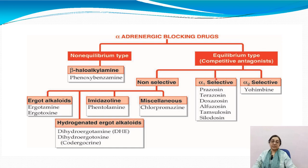The selective alpha-1 blockers are prazosin, terazosin, doxazosin, alfuzosin, tamsulosin, and silodosin. These are the alpha-1 selective adrenergic blockers. The alpha-2 selective blocker is yohimbine — it is the one drug that is alpha-2 selective.